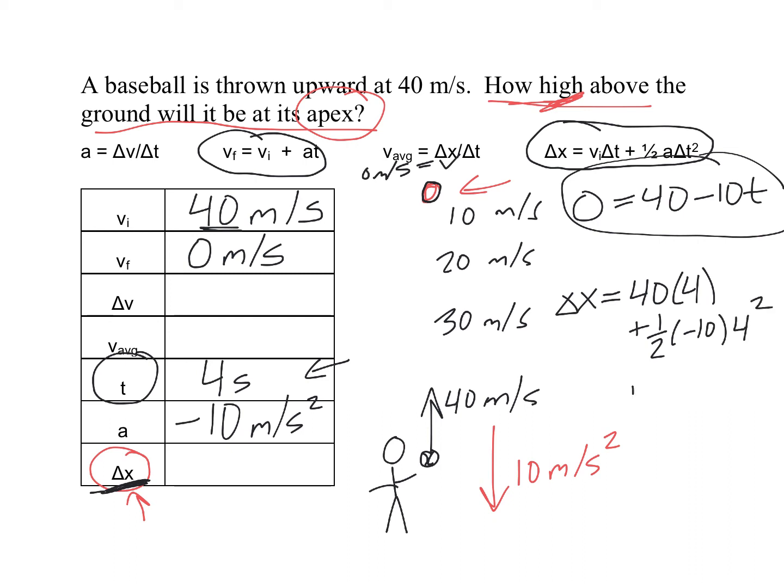So 40 times 4 is 160. And then 4 squared is 16 times 10 is 160 times 1 half, it ends up being minus 80. Bottom line is we get delta x equals 80. And that is the height above where it was thrown from. That's our final answer.